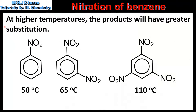Next we will look at the importance of temperature in the reaction. At higher temperatures the products will have greater substitution. At 50°C the product is nitrobenzene. At 65°C we have the di-substituted product 1,3-dinitrobenzene. At 110°C we have the tri-substituted product 1,3,5-trinitrobenzene. Therefore, to obtain nitrobenzene the reaction is carried out at 50°C.